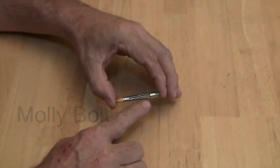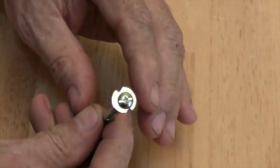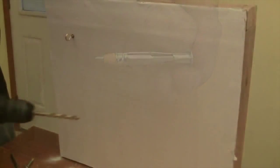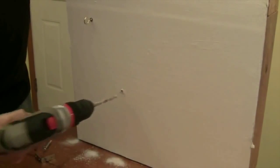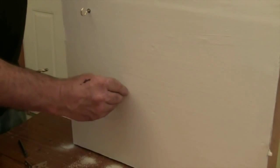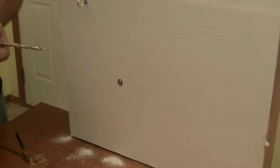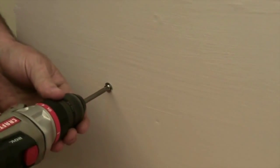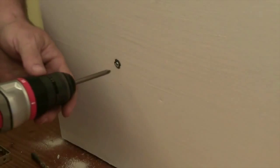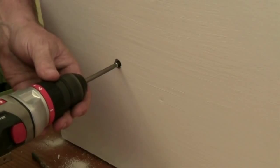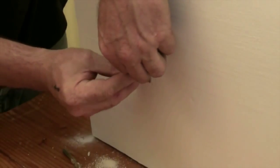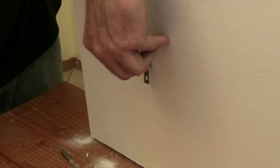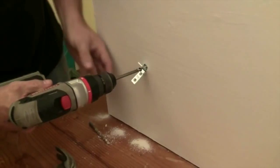The sleeve on a molly bolt expands when installed. The expanded sleeve creates an anchor within the wall. Drill a hole just large enough for the molly bolt to pass through. Insert the molly bolt into the drywall until the screw head is flush against the wall. As you turn the screw clockwise, the slotted sleeve expands. Stop drilling when you feel resistance. Remove the screw from the sleeve. Assemble the hardware onto the screw. In this case we are using a bracket. Insert the screw into the bolt and drill.